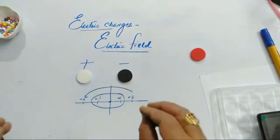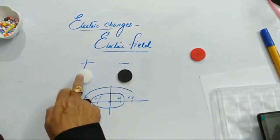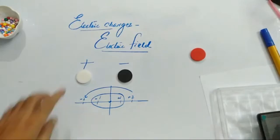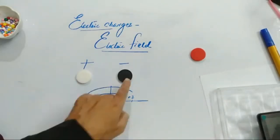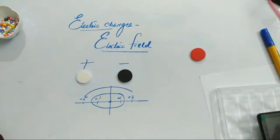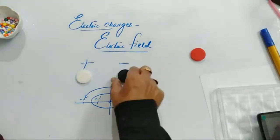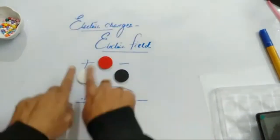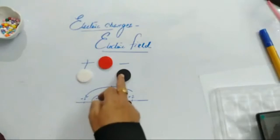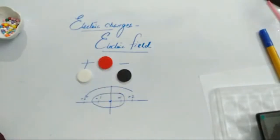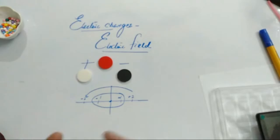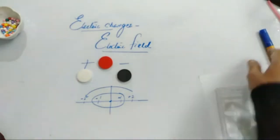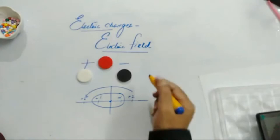Modern concept clearly says: if an object loses electrons, it immediately gets positive charge; if an object gains electrons, it gets negative charge. When equal amounts of positive and negative are added, it becomes neutral. The branch of physics that deals with this is called static electricity. 'Static' means at rest, and the word 'electricity' is coined from amber — the Greek meaning of amber is electron.